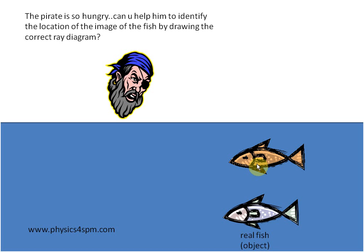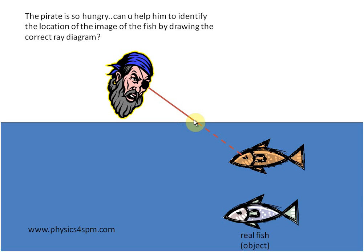The second step, you pick any point on the image of the fish, and you draw a dotted line inside the water and a straight line outside the water pointing towards the eye of the pirate. You've got this line where you have a bold straight line outside the water and a dotted line inside the water. You must use a dotted line.